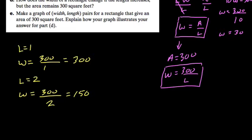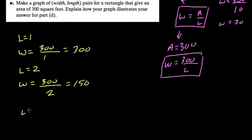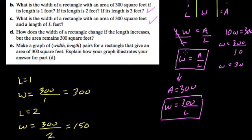If we make the length equal to 3, okay, well then now the width will equal 300 divided by 3, that equals 100. So we're dividing by a larger amount there, and that pattern follows. So we kind of got that question down, I think.